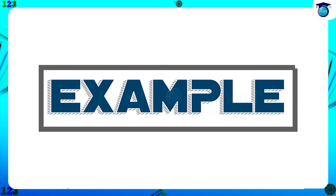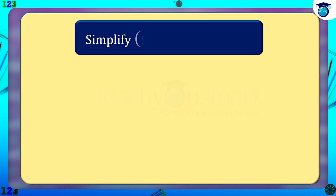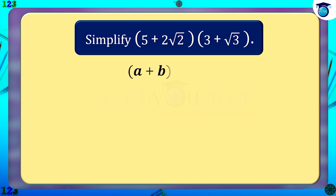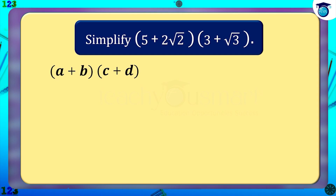Let us do some examples. Simplify (5 + 2√2) multiplied by (3 + √3). This expression is in the form of (a+b)(c+d). We know that (a+b)(c+d) equals ac plus ad plus bc plus bd.